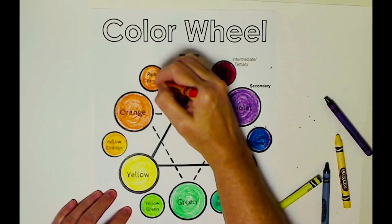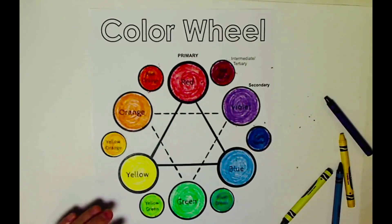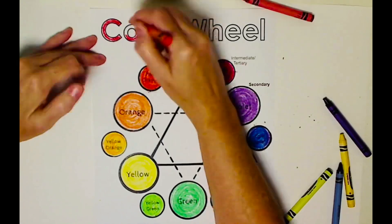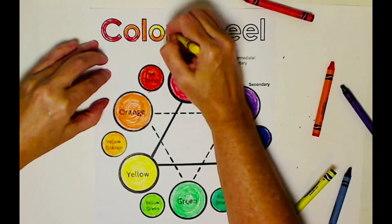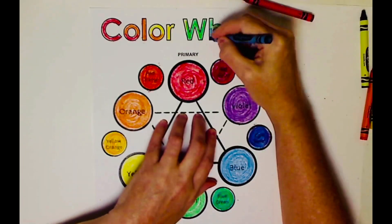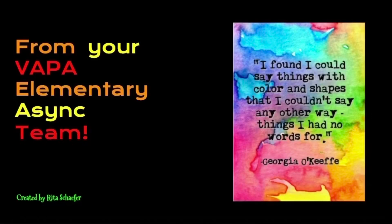Now I like to color the title in ROYGBIV order, like the rainbow. So we start with red, orange, yellow, green, blue, indigo, and violet. I hope you enjoyed this and I hope you took your time coloring all your circles in. Have a colorful day!